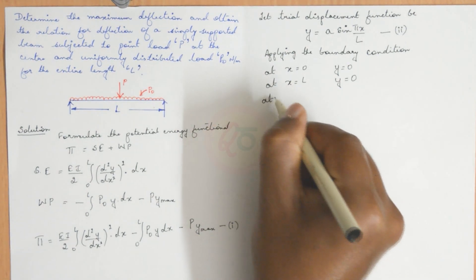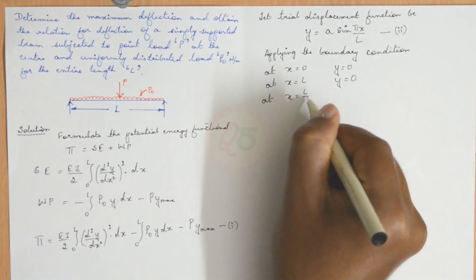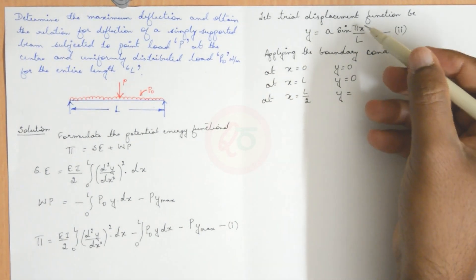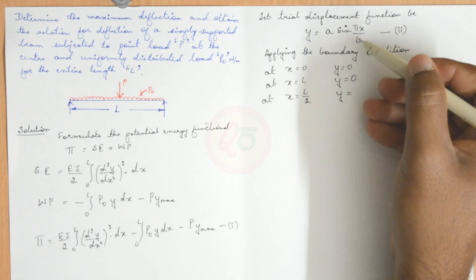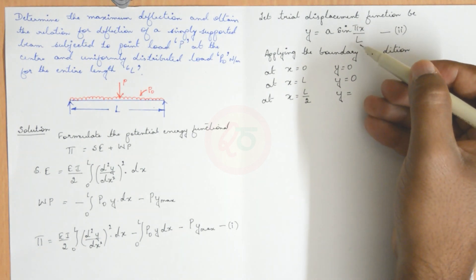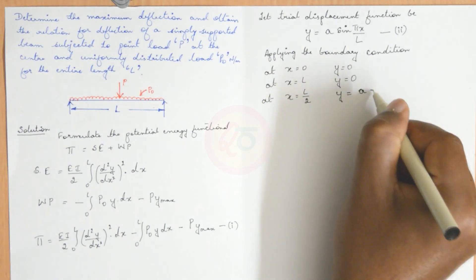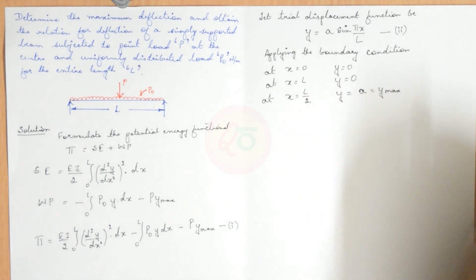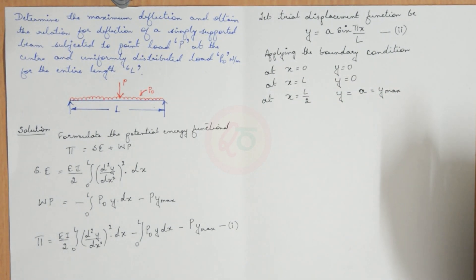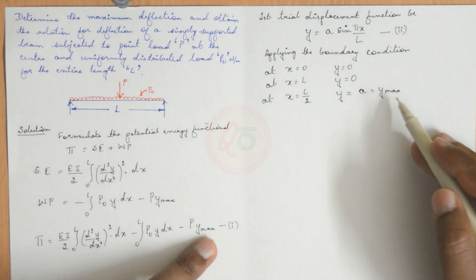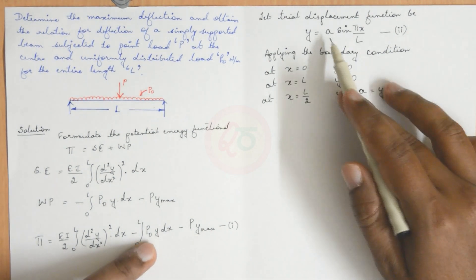At x = L/2, y will become: substituting L/2, L gets cancelled, so sin(π/2) remains, and sin(π/2) is 1. So y becomes equal to A, which is nothing but y_max at the center. Now we need to substitute the values of d²y/dx² as well as y_max — we have obtained it to be A, and we have the y value.